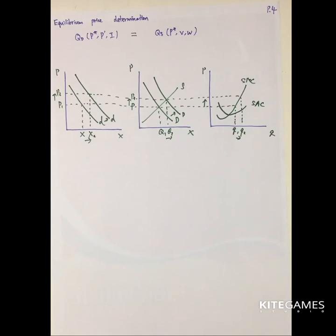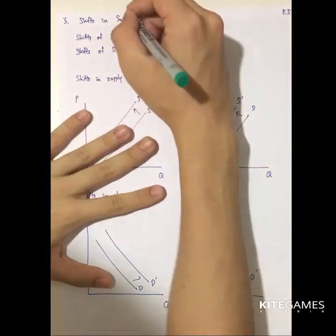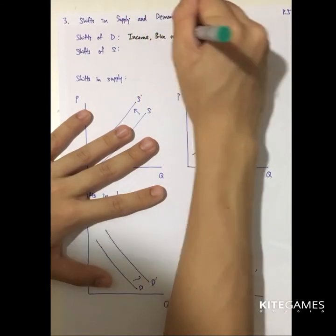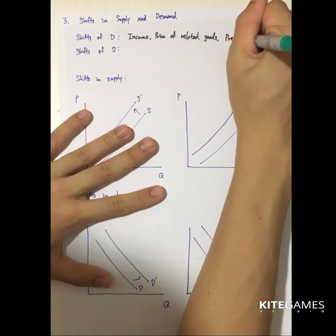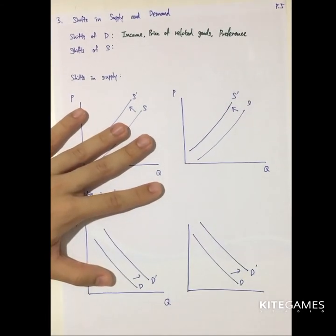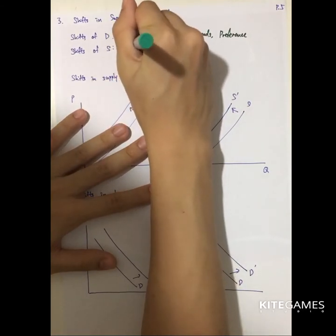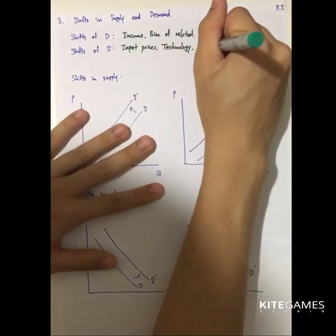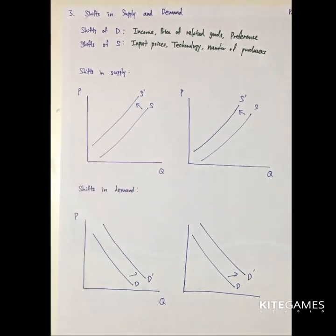Next, we examine shifts in demand and supply. Determinants that shift demand include income, price of related goods (substitutes and complements), and preferences — for example, a fashion wave toward certain goods. Determinants that shift supply include input prices, technology, and the number of producers. These are all non-price determinants that cause shifts in the demand and supply curves.